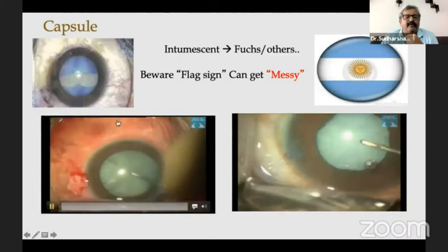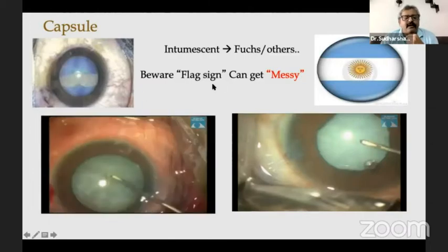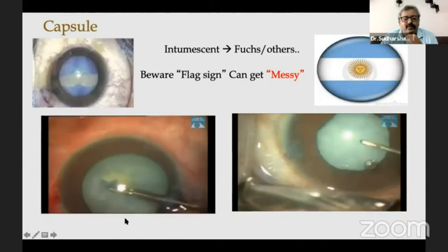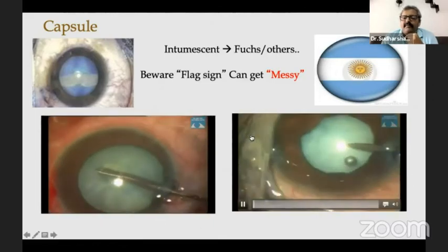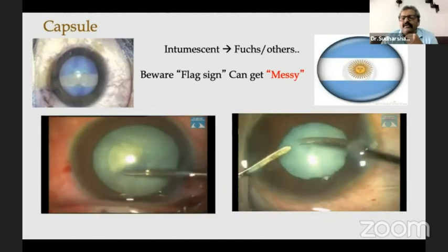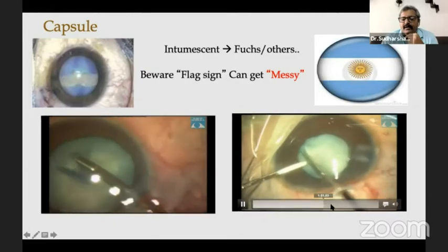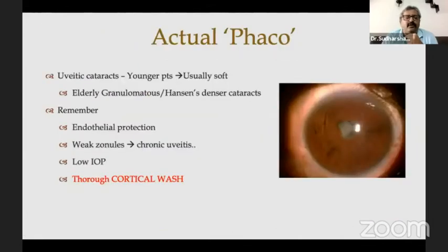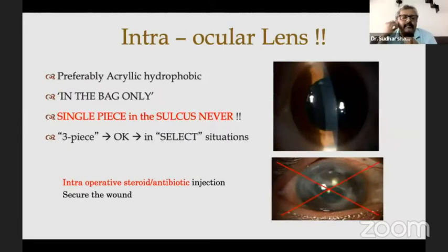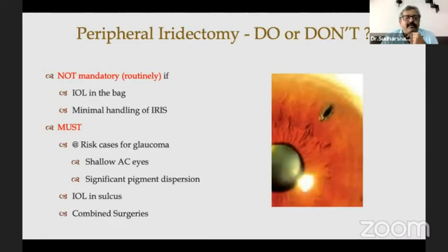Remember the flag sign in intumescent cataracts in Fuchs uveitis. Decompress the lens. Sometimes the capsule can be fibrous and membranous — puncture it, cut it with scissors, and extend the rhexis after IOL placement also. Phacoemulsification is relatively straightforward except in hard cataracts, but endothelial protection is critical. The preferred IOL is acrylic in the bag; single-piece IOLs in the sulcus should never be used. Peripheral iridectomy is not done routinely but can be considered in patients at risk of glaucoma or in shallow eyes.